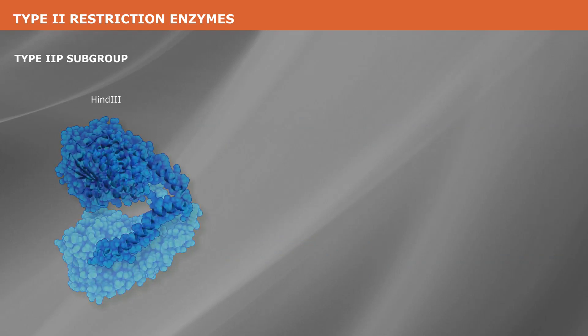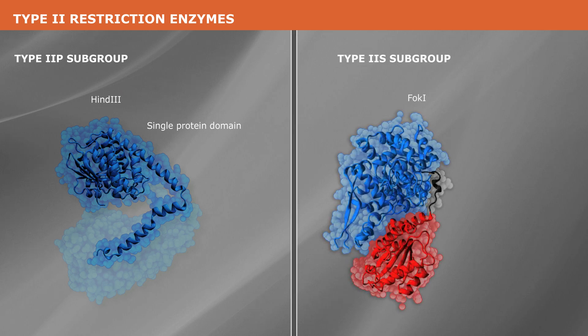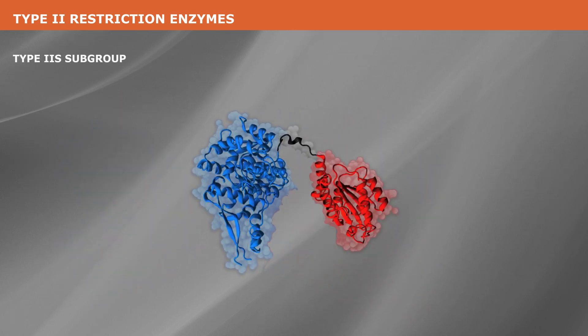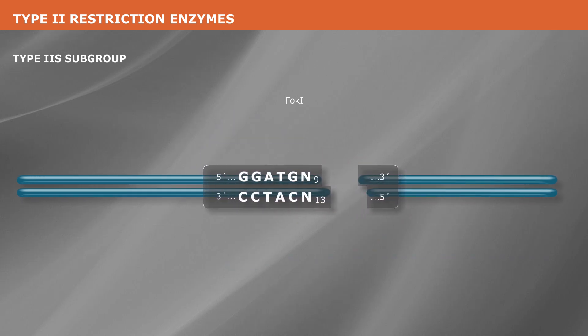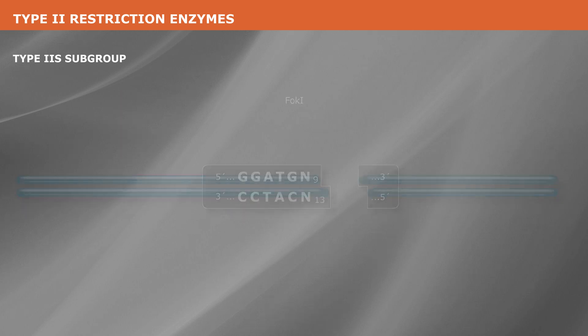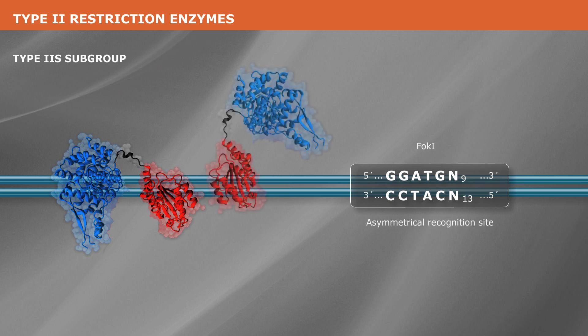In contrast to type 2P enzymes, in which the amino acids that catalyze cleavage and those that recognize the DNA are integrated into a single protein domain, the larger type 2S enzymes' amino acids are partitioned into two separate domains, linked by a short polypeptide connector. Due to this separation, the catalytic domain is positioned to one side of, and several base pairs away from, the sequence bound by the recognition domain, causing cleavage to be shifted to one side of the sequence. Type 2S enzymes generally bind to DNA as monomers and recognize asymmetric sequences, but cleave as dimers.